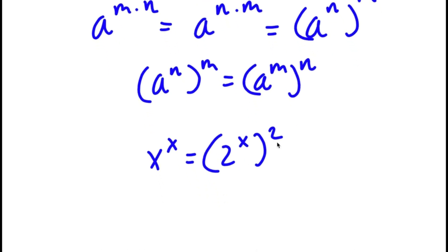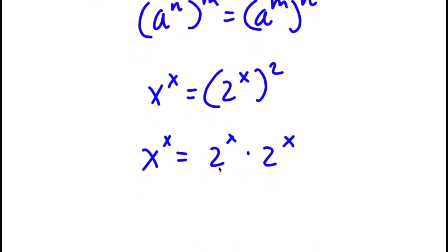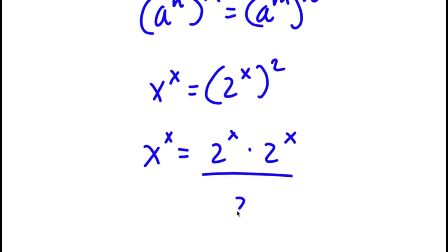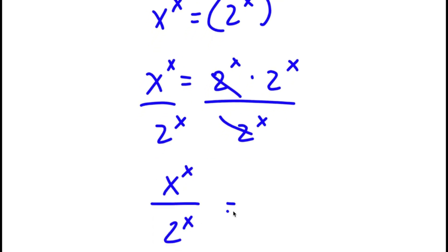Now, 2 to the power of x squared, I'm going to rewrite this as 2 to the power of x times 2 to the power of x. So now on both sides I'm going to divide by 2 to the power of x. These two cancel out, and now I'm left with x to the power of x over 2 to the power of x is equal to 2 to the power of x.